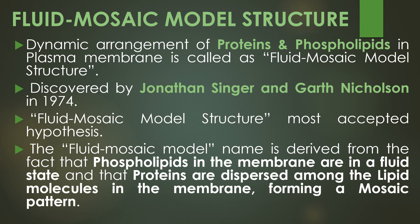Among the various structures proposed by various scientists, the most accepted hypothesis of the plasma membrane structure is the fluid mosaic model. The fluid mosaic model name is derived from the fact that the phospholipids in the plasma membrane are in a fluid state, and the proteins are dispersed among the lipid molecules in the membrane, looking like a mosaic pattern. Combined, the fluid pattern of phospholipids and the mosaic pattern of proteins and lipids together are referred to as the fluid mosaic model of the plasma membrane.